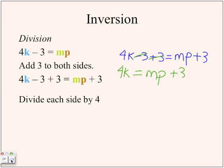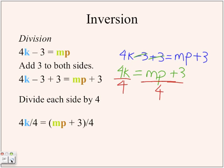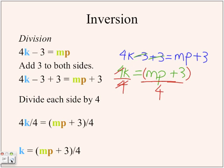You want to get k, not 4k, so that's why you divide each side by 4. Doing that gets rid of the coefficient in front of k. So then you have k equals mp plus 3, divided by 4.